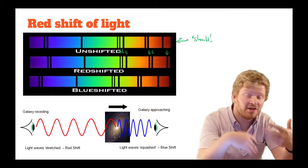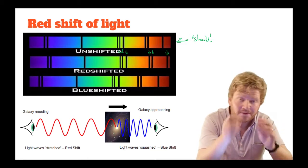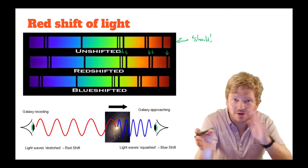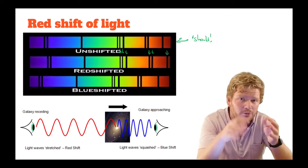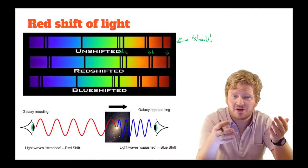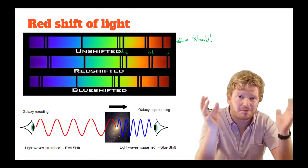And that tells us that the galaxies are moving away from us. Or if you remember the previous slide, we're moving away from the galaxies. And because that looks that way at every single galaxy we look at, pretty much all of them are moving away from us, we can be pretty certain that the universe must be expanding.